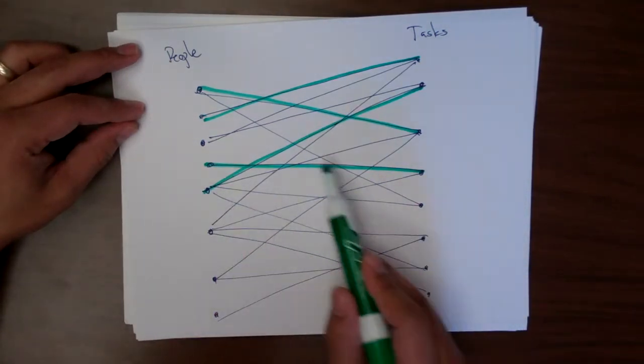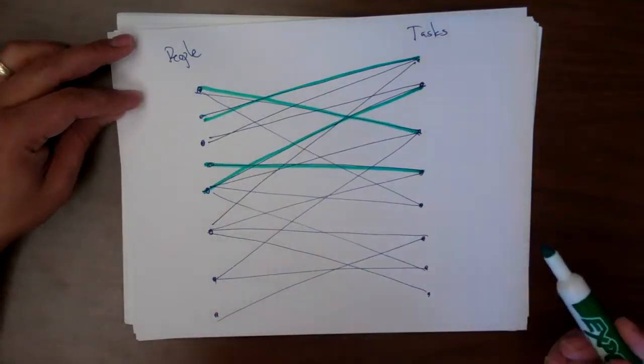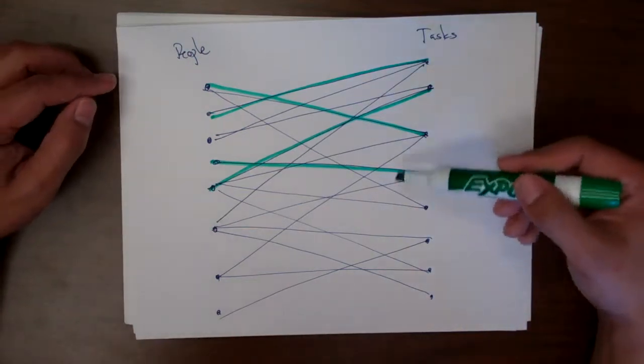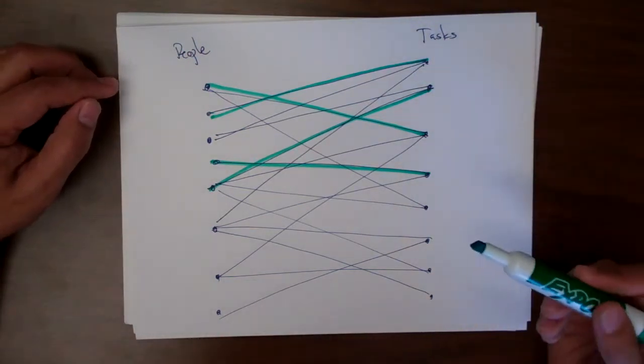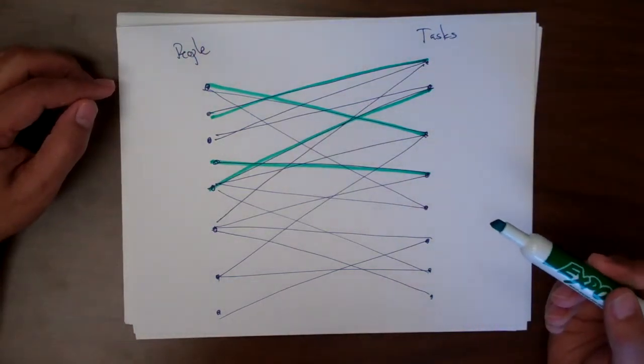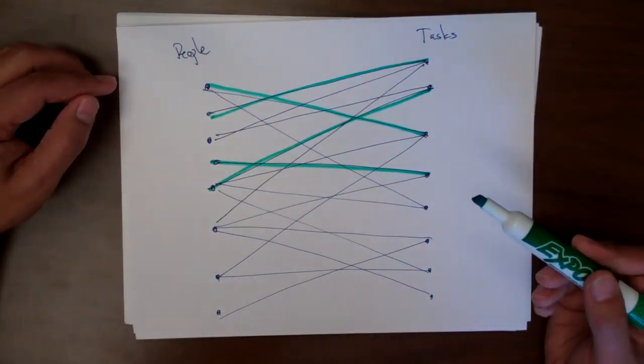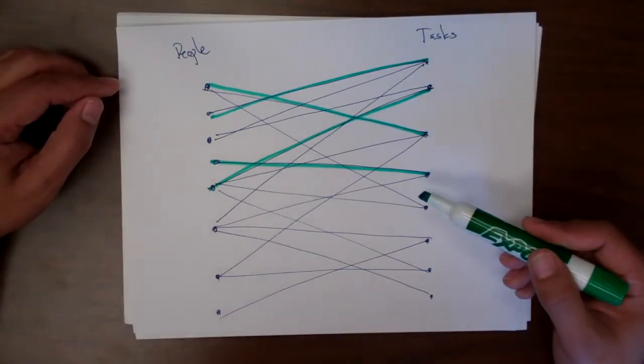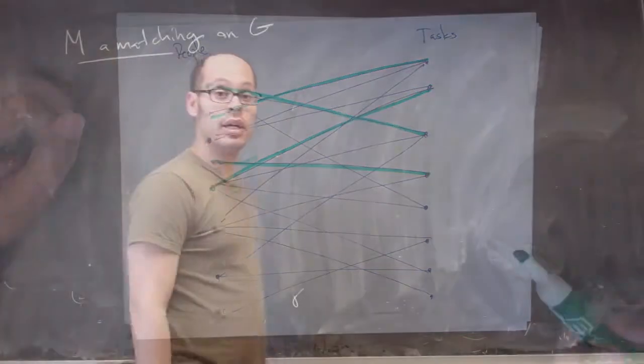This person can't do this and can't do that. So the question is, if I choose things correctly, is it possible to solve this kind of assignment problem?